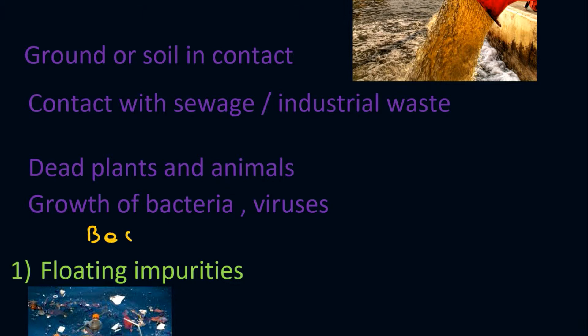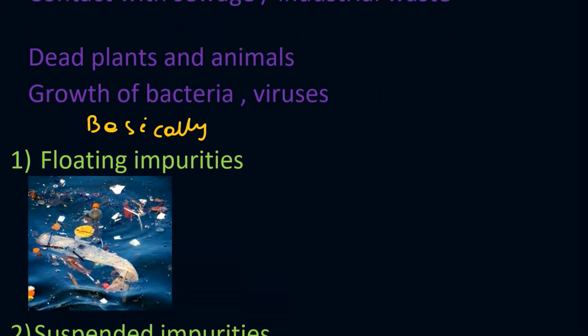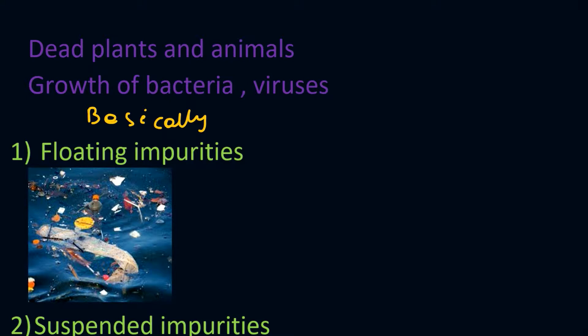There are five types of water impurities. The first is floating impurities. Materials like plastic, clothes, leaves, and small branches of trees neither settle at the bottom nor sink — they just float on the surface of the water. This image shows waste thrown into water as an example of floating impurity. This type can be removed by filtration.